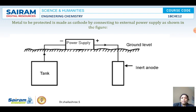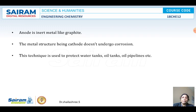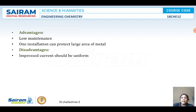This is the diagrammatic representation of the impressed voltage method. To protect a tank, it should be connected with an inert anode like graphite. The two terminals are connected to a direct power supply which supplies electrons, and the specimen acts as a cathode. The metal structure, being cathodic, does not undergo corrosion. This technique is used in protection of water tanks, oil tanks, and underground oil and water pipelines.